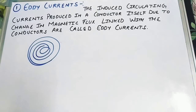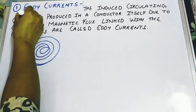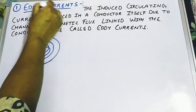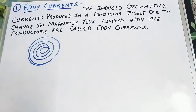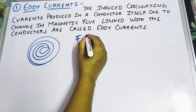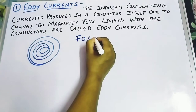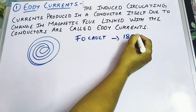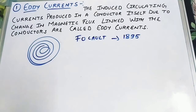In Hindi, this is called 'bhawar.' We already know current means the flow of electrons — so how can a current be like an eddy? We are going to see that. This term 'eddy current' was given by the physicist who discovered it: his name is Foucault. He discovered this eddy current in 1895, and this current is also called Foucault's current.